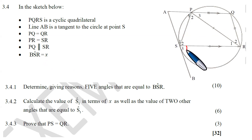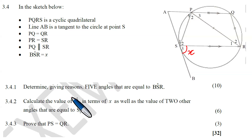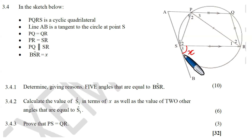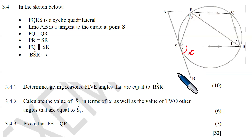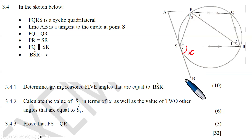Determine, giving reasons, five angles that are equal to PSR. So there are five angles equal to PSR — in other words, five angles equal to x. Let us spend some time analyzing these. There are more questions I would have loved to do, but let's see how well we can proceed to solve these particular problems.